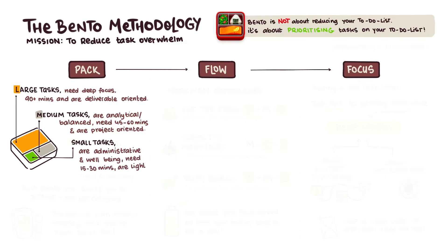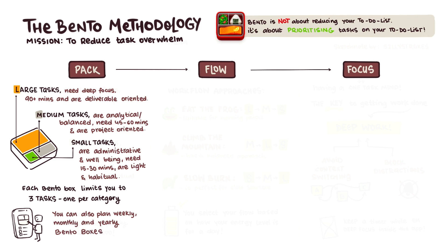Now each bento box limits you to just those three tasks, really narrowing you down into paying more attention to what are your core focuses. So you can pick one of them, for example, a large task could be write report, medium task could be maybe manage email campaign, and a small task might be 15 minutes of yoga. You can also use them to plan weekly, monthly, and yearly, but bento box is great per day.